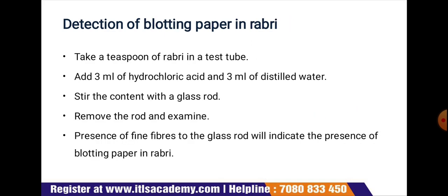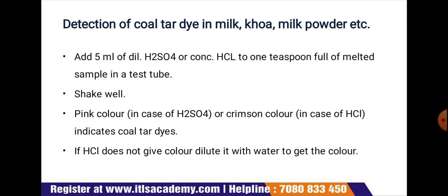Next is the detection of blotting paper in rabri. Take a teaspoon of rabri in a test tube, add 3 ml of hydrochloric acid and 3 ml of distilled water, and stir the content with a glass rod. Remove the rod and examine it — presence of fine fibers on the glass rod indicates the presence of blotting paper in the rabri.